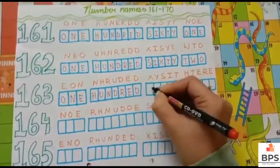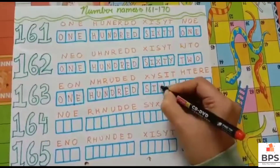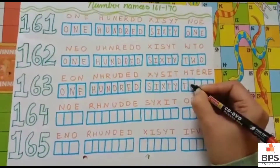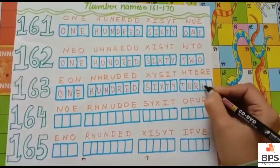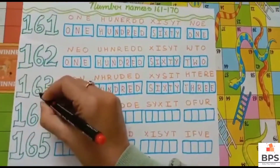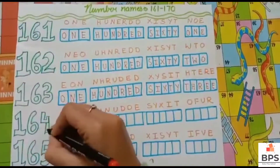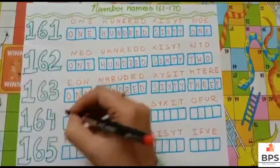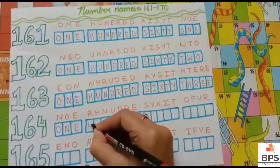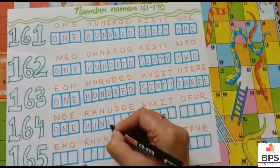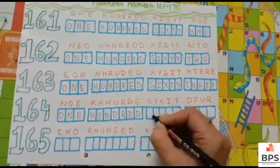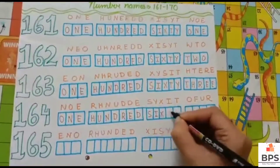One hundred sixty three. 163. O-N-E, one. H-U-N-D-R-E-D, hundred. S-I-X-T-Y, sixty. T-H-R-E-E, three. One hundred sixty three.